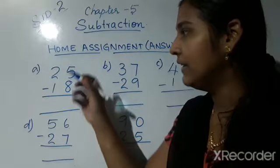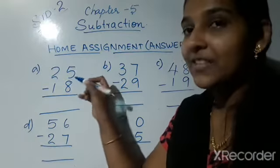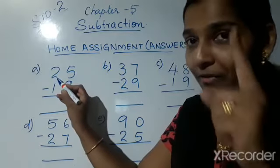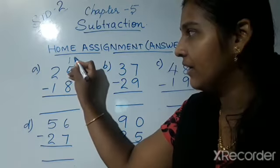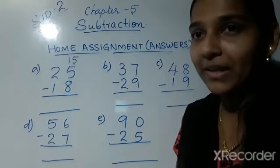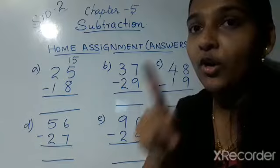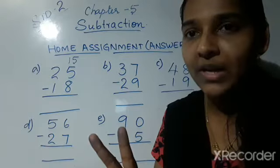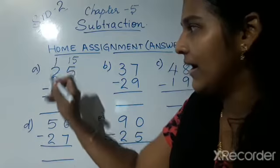First, you have to make the number 5 into 15. How do we do that? You have to borrow 1 from the number 2. Borrow 1 from 2 and 5 will become 15. Now 5 becomes 15, and since we borrowed 1 from the number 2, there is no 2 now — it is only 1. So you write 1 here.